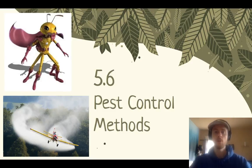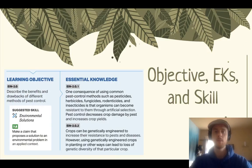One unintended consequence, as demonstrated by the crop duster flying over the fields, is that we can kill unintended target species with pesticides. Another problem is pesticide resistance — we have a super bug on screen to represent that pests can become resistant to the pesticides designed to kill them. Our objective is to describe the benefits and drawbacks of pest control, understand pesticide resistance, GMOs as a solution, and their impact on biodiversity.